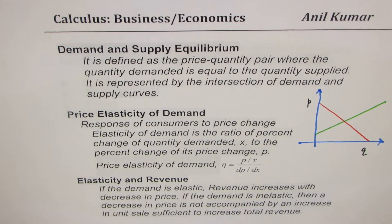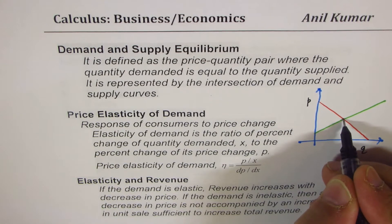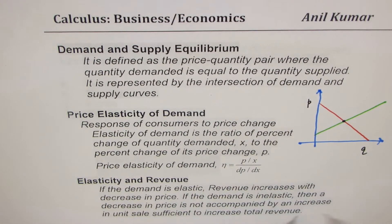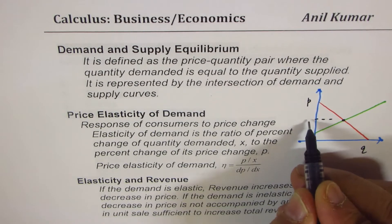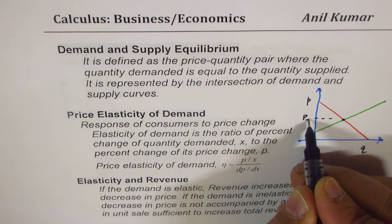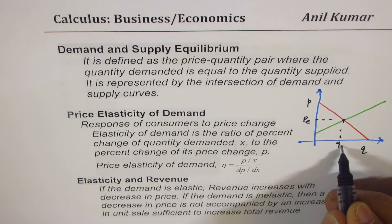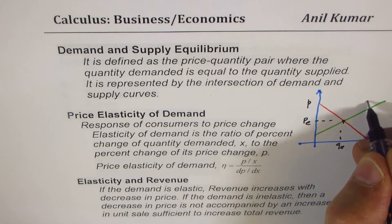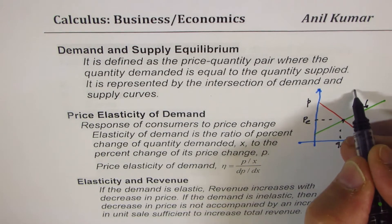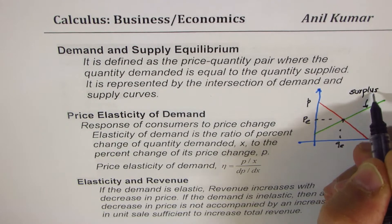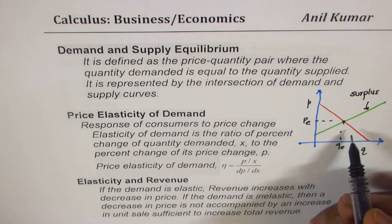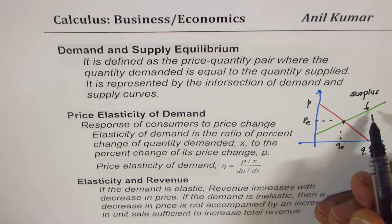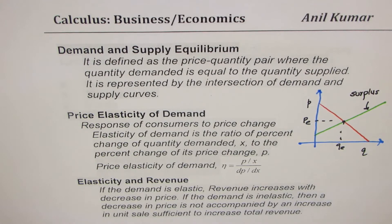There is a state of equilibrium in the market when both supply and demand curves meet. At this point, if you know the price P-equilibrium and quantity Q-equilibrium, the market is stable. Beyond this equilibrium price there is a surplus in the market, since more items have been supplied than consumers are ready to buy, perhaps because the price is too high.